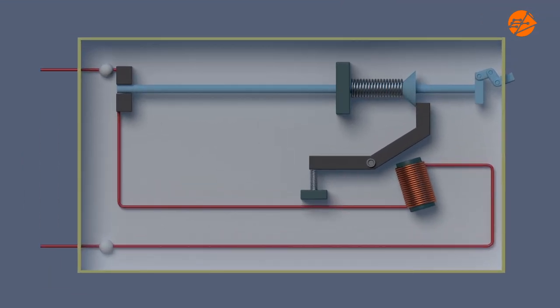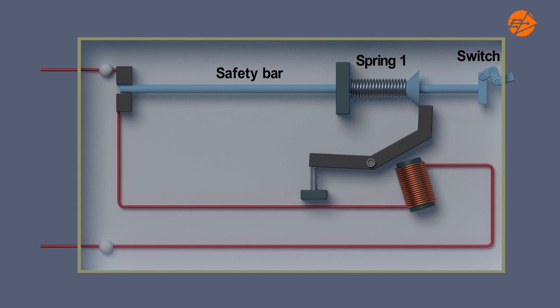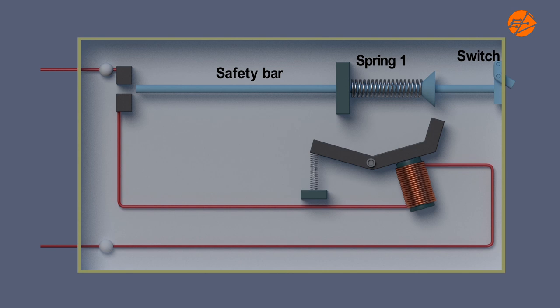A circuit breaker contains the switch we see from outside the circuit breaker which is attached to the safety bar with spring 1. This spring makes the safety bar move out to break the circuit when the iron latch is released.